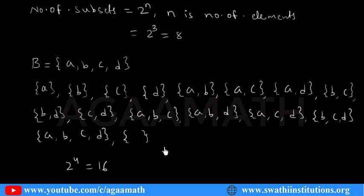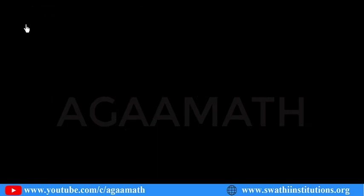This is how we write the possible subsets from a given set and verify whether we have listed all subsets or not. The number of subsets is 2 to the power N, where N is the number of elements of the given set. Now let us see the proper subsets. Let A = {1, 2, 3}.